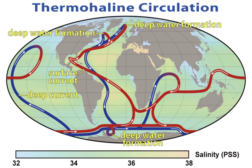Physical oceanography studies the ocean's physical attributes including temperature-salinity structure, mixing, surface waves, internal waves, surface tides, internal tides, and currents. The following are central topics investigated by physical oceanography.